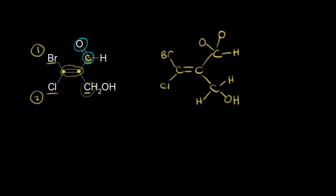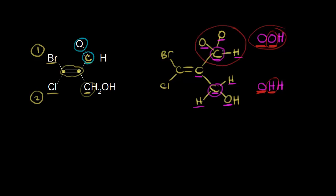Let's go back to thinking about priority. We started with the carbon on the right side, got to these two carbons, and had a tie. So we think about what atoms are directly bonded to those carbons. The top carbon is directly bonded to an oxygen, an oxygen, and a hydrogen — so: oxygen, oxygen, hydrogen. The bottom carbon is directly bonded to an oxygen and two hydrogens — so: oxygen, hydrogen, hydrogen. To assign priority, we look for the first point of difference. The first two oxygens tie, but then we compare oxygen versus hydrogen. Oxygen has a higher atomic number, so this is our tiebreaker. This group gets higher priority — number one — and the other group gets number two.